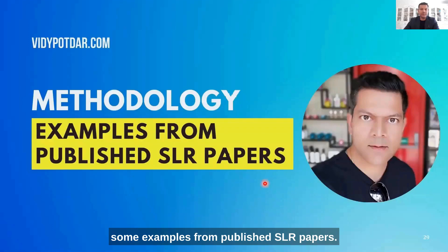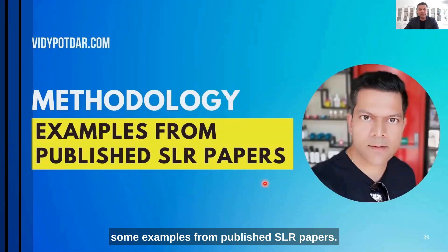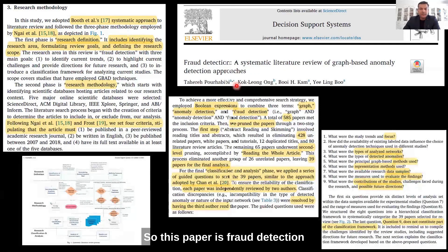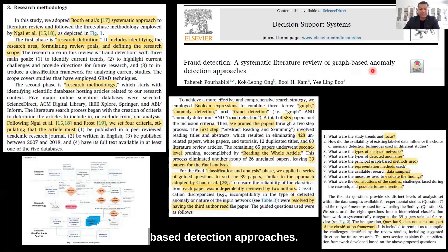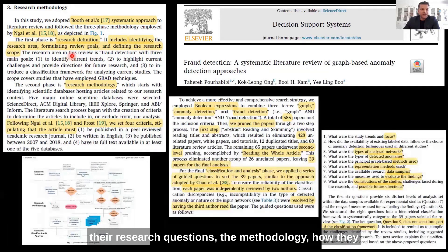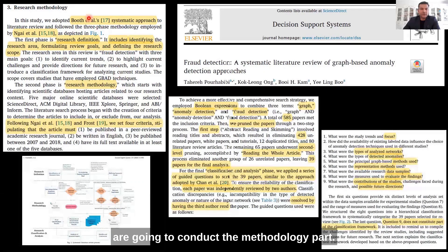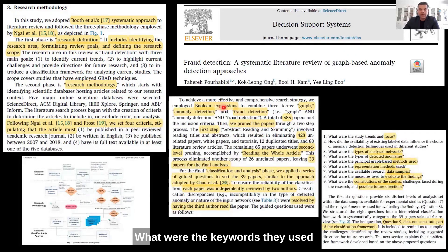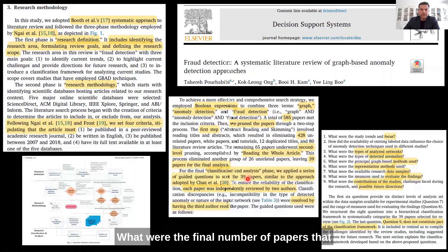Now I wanted to show some examples from published SLR papers. This paper is a fraud detection systematic review on graph-based detection approaches. This is their research methodology section - research definition, what they want to do, their research questions, and the methodology. I'm only showing the methodology part of these papers. What were the keywords they used and how they screened their papers, and what were the final number of papers?